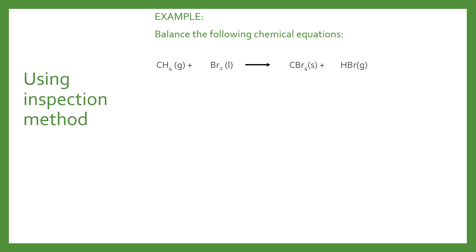In this first example, the species that has the most complicated chemical formula is methane. So we put one in front of methane. By putting one in front of methane, we have one carbon and four hydrogen. So in front of tetrabromomethane (CBr4), we need to put one to match the one carbon on the reactant side and also one carbon on the product side.